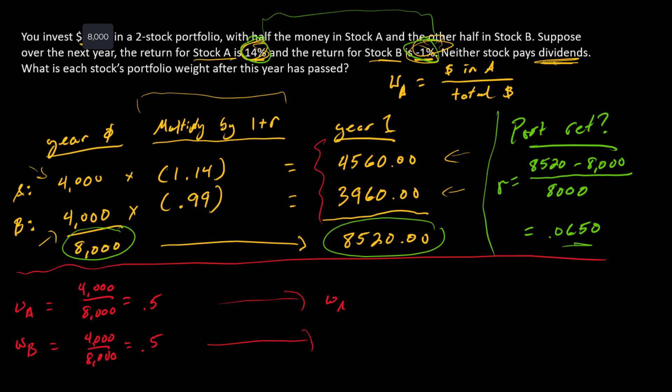The weight in A, the new weight in A, is the new dollars in A divided by total new dollars. And the weight in B is the new dollars in B divided by the total new dollars.